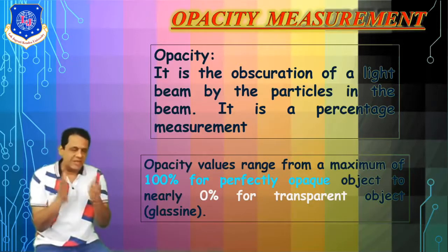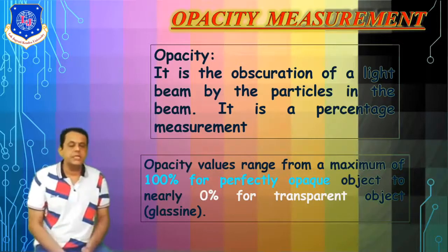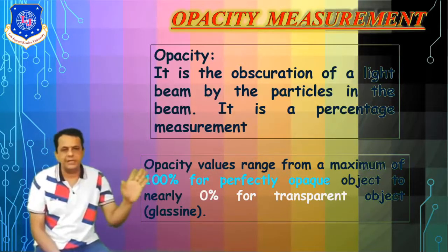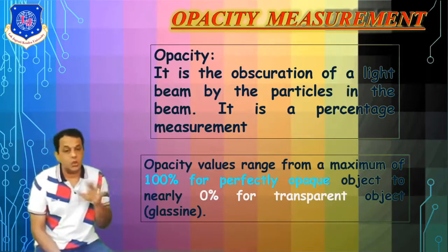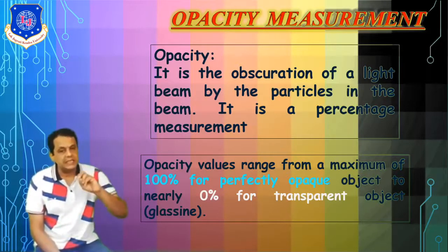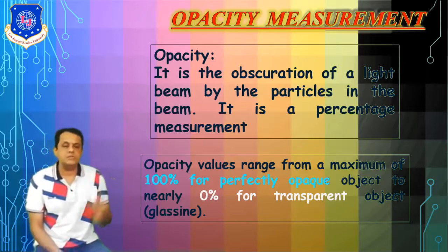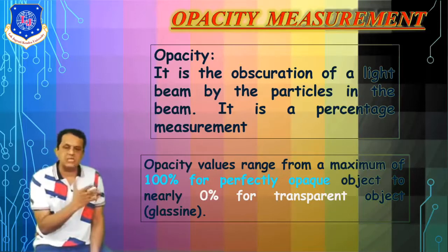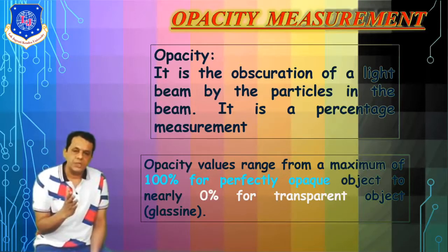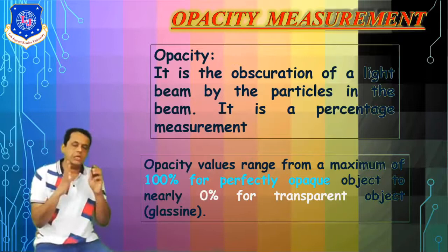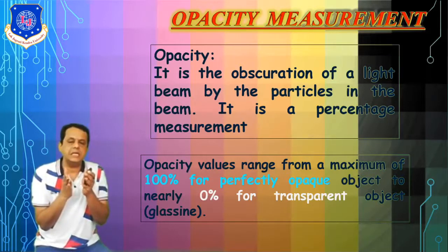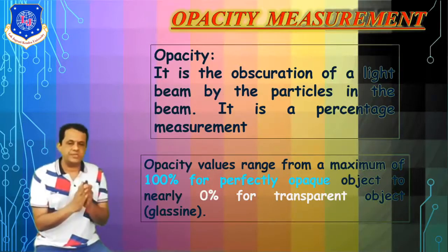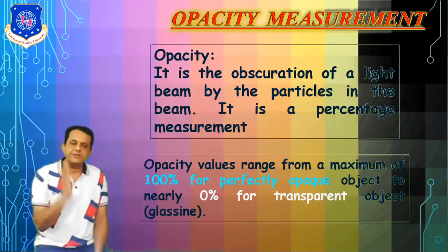Opacity values range from 0 to 100. Here, 100% means perfectly opaque — nothing can pass through, so there is no transparency at all. And 0% opacity means it is a totally transparent material; for example, glass has 0% opacity. So please do not make the mistake: 100% opacity means no light passes, and 0% opacity means 100% transparent.